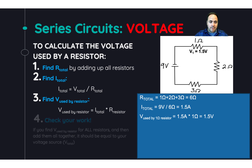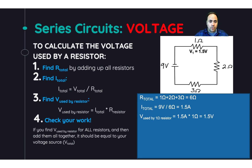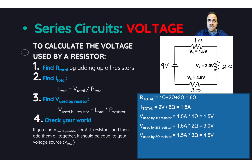The fourth step lets you check your work: find the voltage for all of the resistors and add them together — you should get your original supplied voltage, in this case nine volts. Doing the math for each resistor confirms that their voltages all add up to nine volts, so the work is correct. Notice that the more resistance a resistor has, the more voltage it uses.